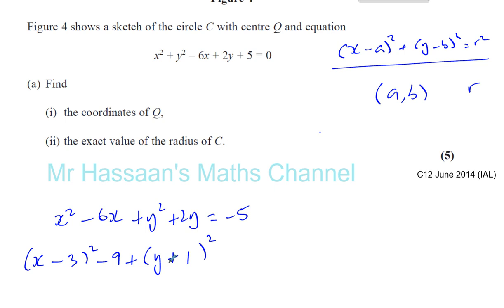Now that will give me Y squared plus 2Y plus 1. I don't want the plus 1 at the end, so I'll take it away. And that's equal to negative 5.